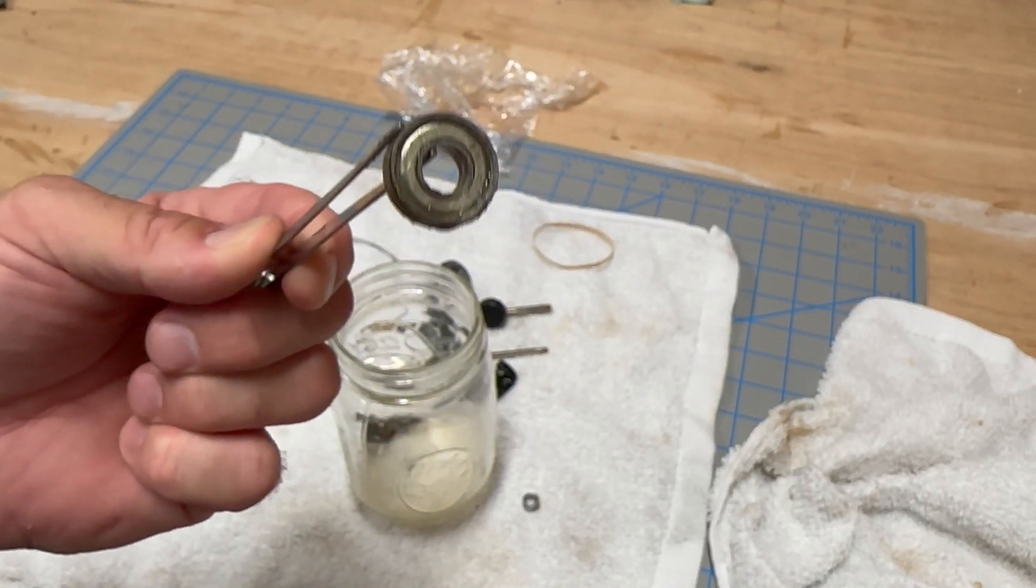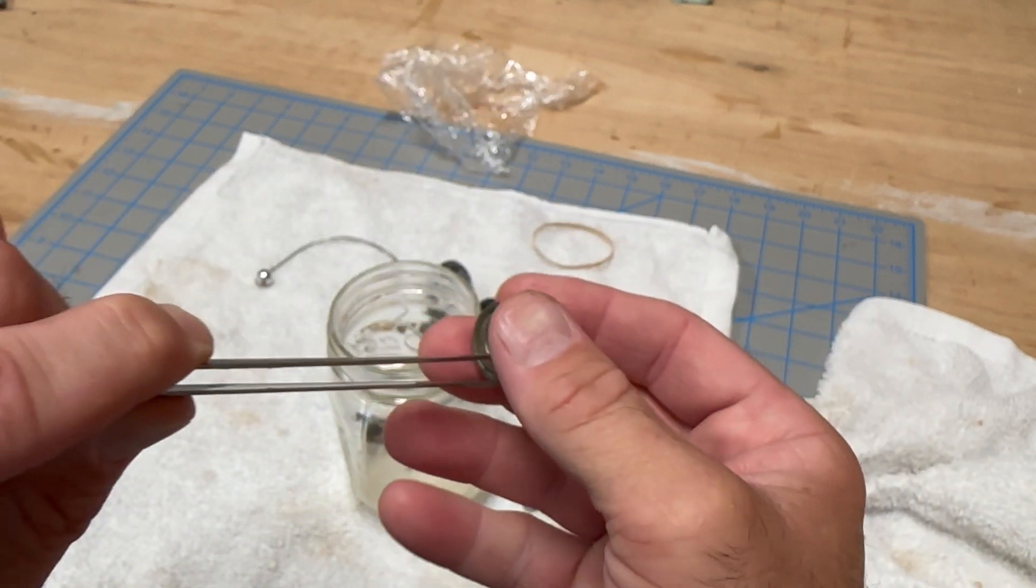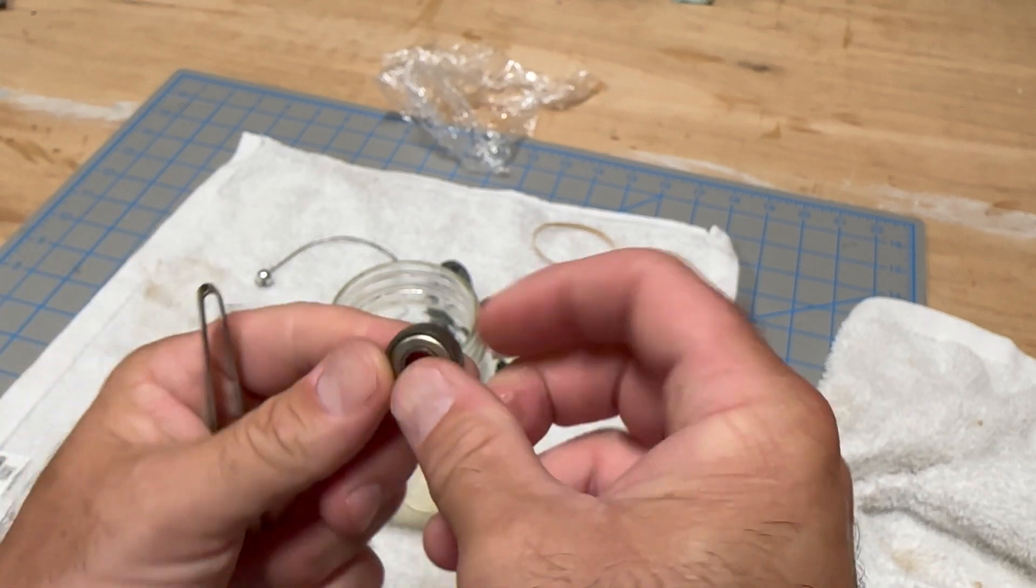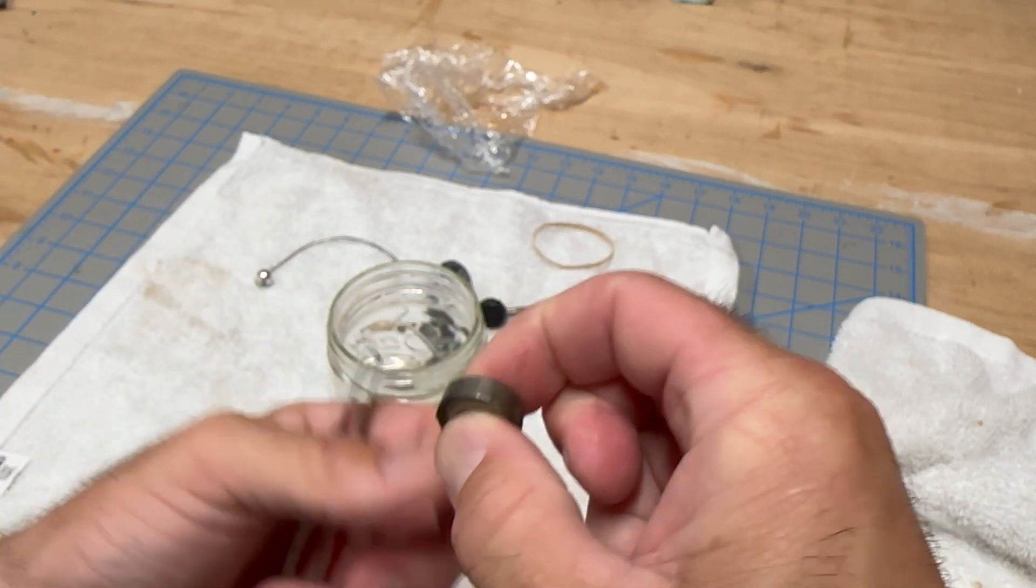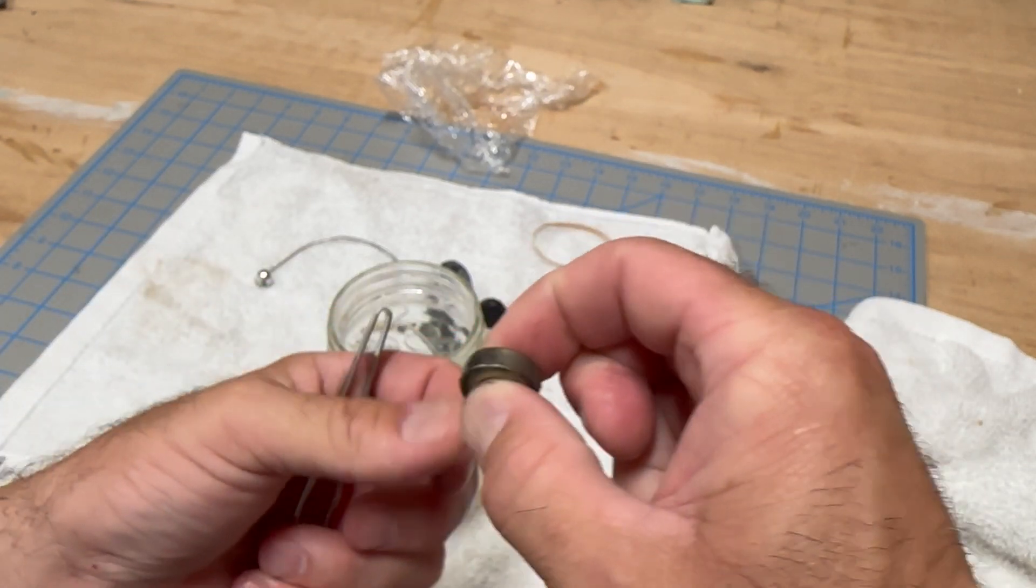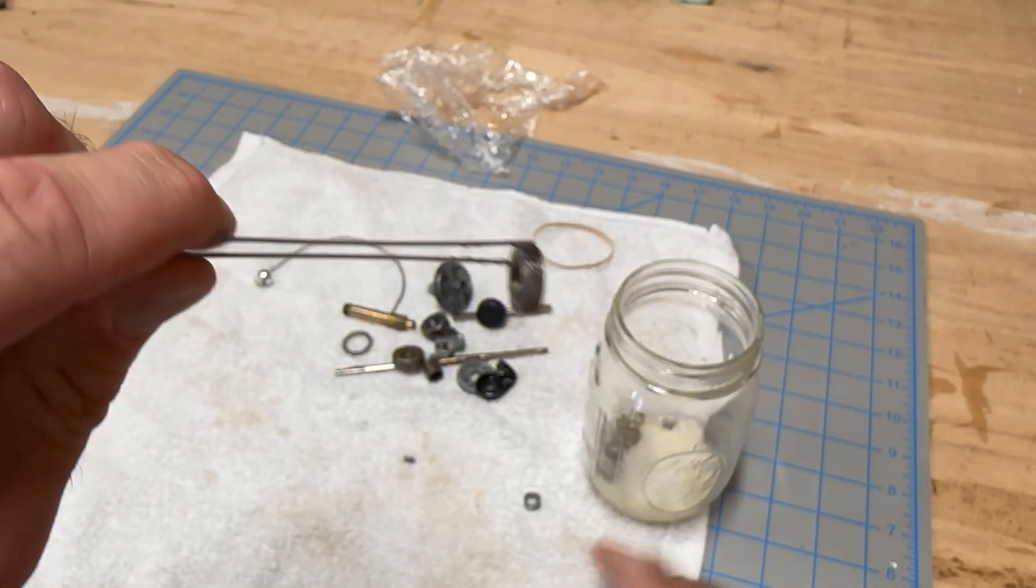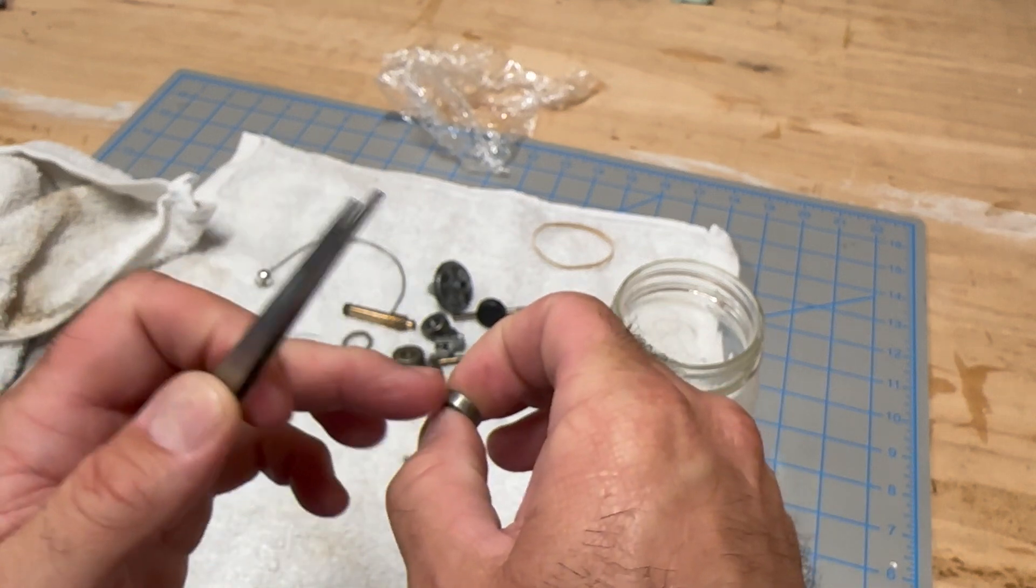The thing that I really wanted to check would be the bearing here. This bearing looks fine. There's no sounds of rust. Spins nice and free. Here's one other smaller bearing here. No rust on this bearing. Spins perfect.